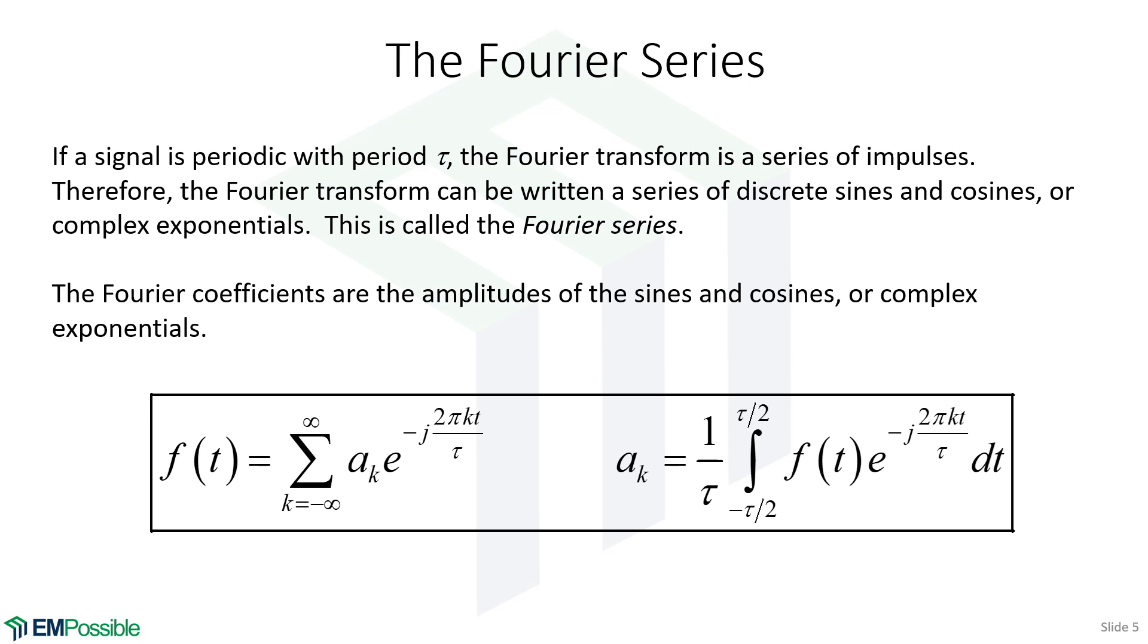The Fourier series. If we have a function that is now periodic with period tau, our Fourier series will be a series of impulses. And so rather than write it as a continuous function, we really only have to write the amplitudes of those impulses, which are discrete sines and cosines.